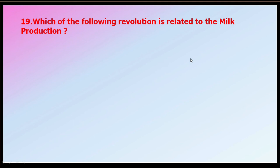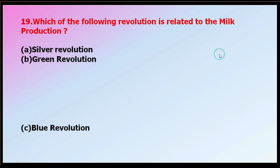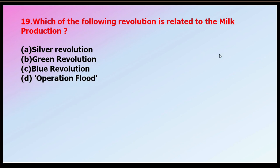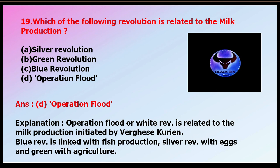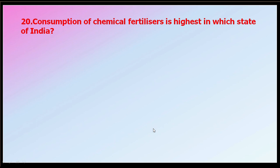Question number nineteen: which of the following revolutions is related to milk production? Options: silver revolution, green revolution, blue revolution, or Operation Flood. The correct answer is Operation Flood, also known as the white revolution, which is related to milk production. It was initiated by Varghese Kurien. The blue revolution is linked to fish farming, the silver revolution to egg production, and the green revolution to agricultural production.